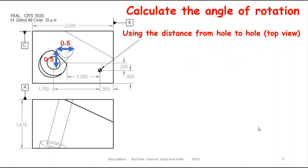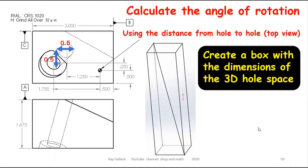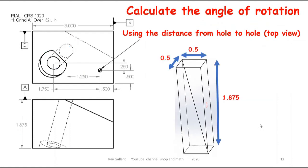So using the distance on the top view from hole to hole, we're going to create a box. And also our length of our box is 1.875. So here's what our ideal box or hole box looks like.